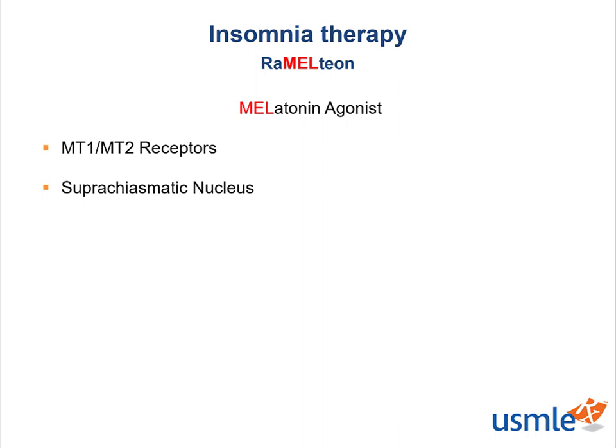The last drug we're going to talk about is ramelteon. Ramelteon is a melatonin agonist and works similarly to endogenous melatonin. It binds the melatonin receptors — the MT1 and MT2 receptors — which are located in the suprachiasmatic nucleus, or SCN. The sleep cycle is regulated by your circadian rhythm, which is driven by the suprachiasmatic nucleus of the hypothalamus. Your circadian rhythm controls the nocturnal release of ACTH, prolactin, melatonin, norepinephrine, and others.